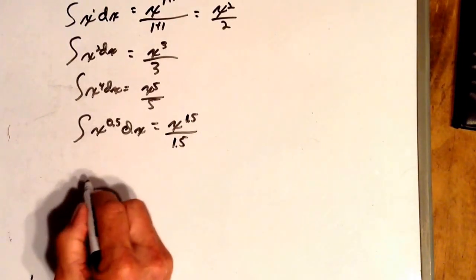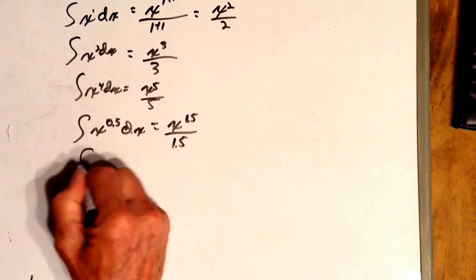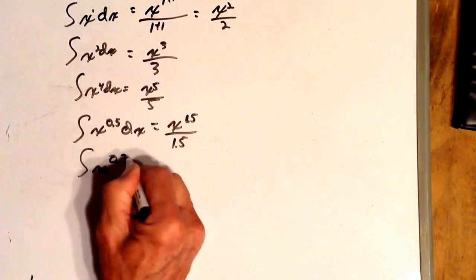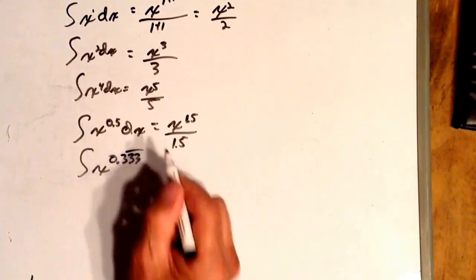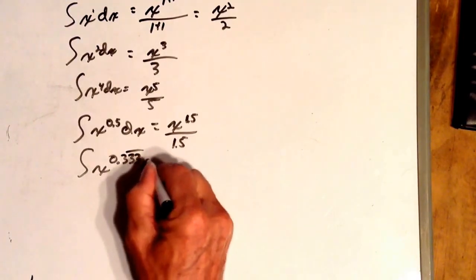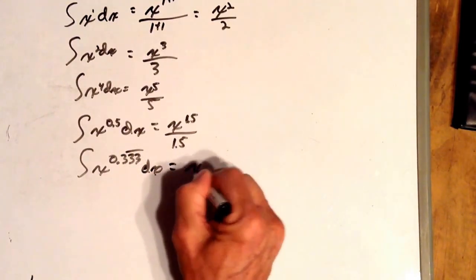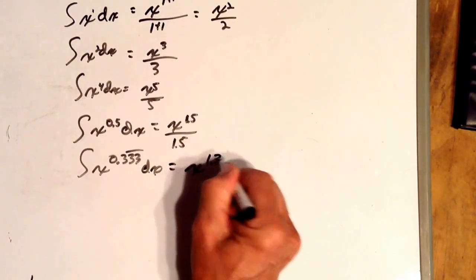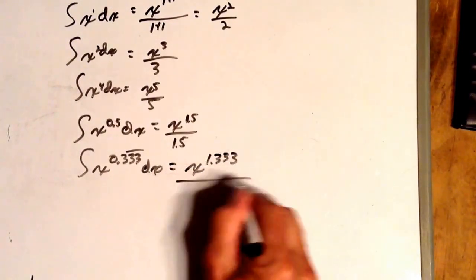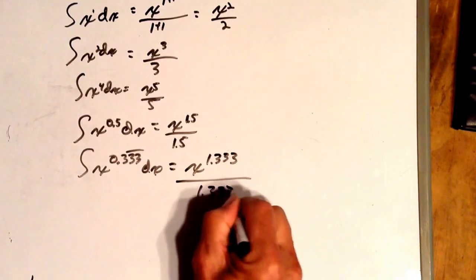What's x to the 3rd? Integral of x to the 3rd power dx. We'll just write 0.333. Of course, that goes on forever. The integral of x to the 3rd dx equals x to the 1 and a 3rd divided by 1 and a 3rd.